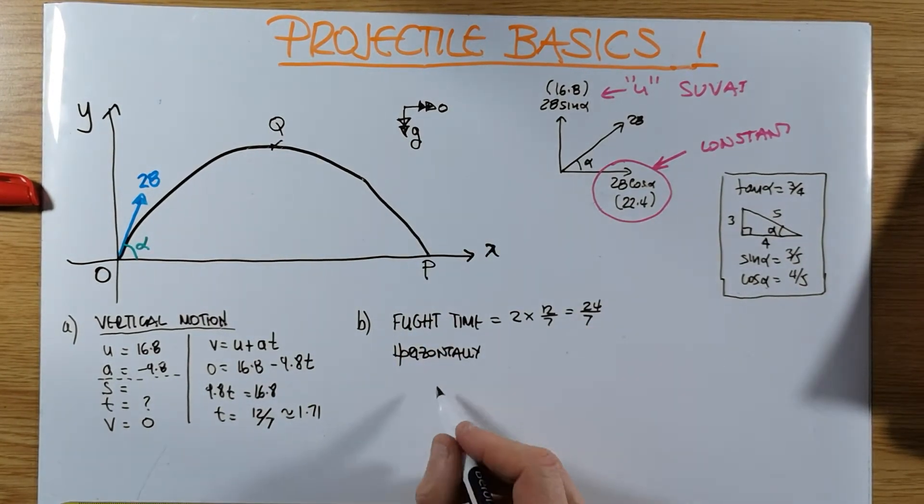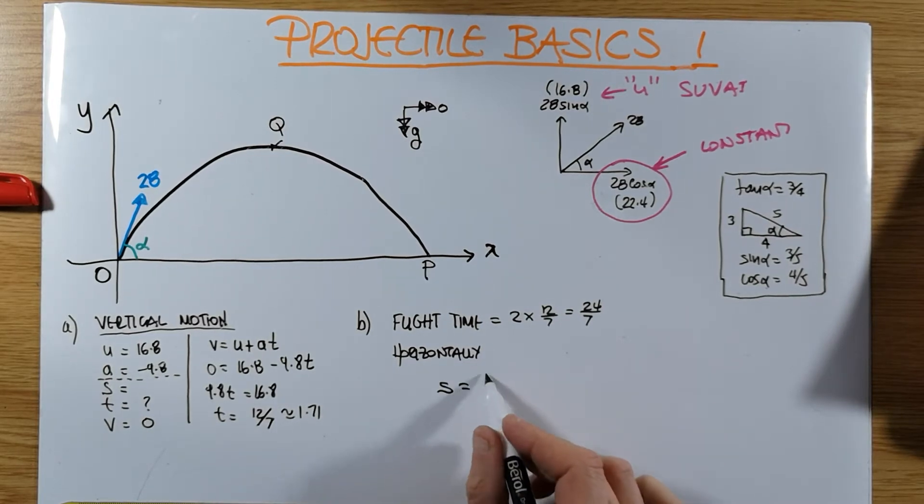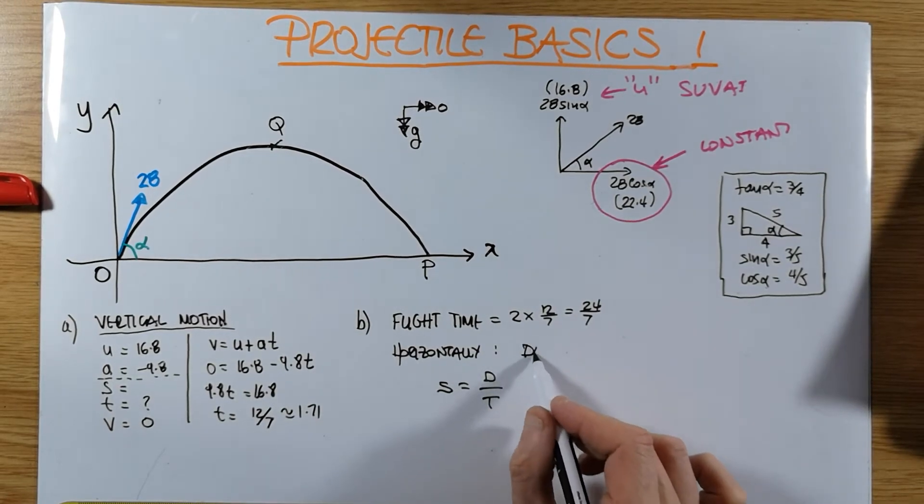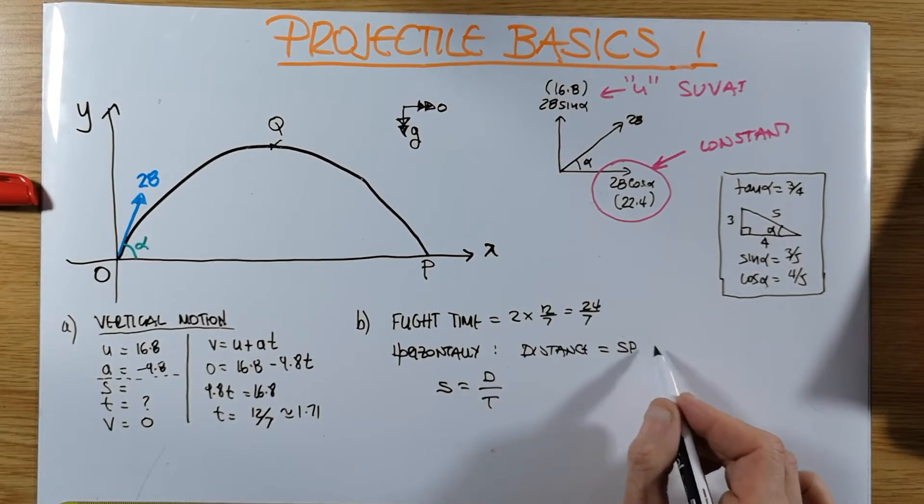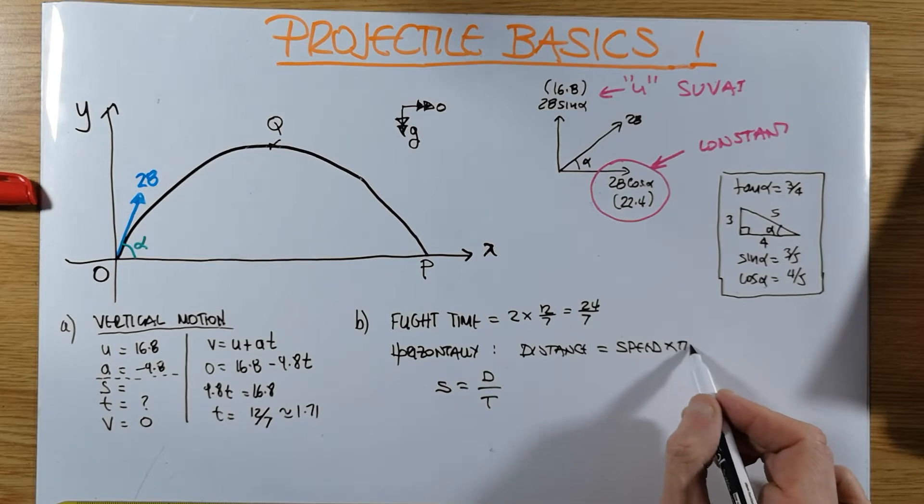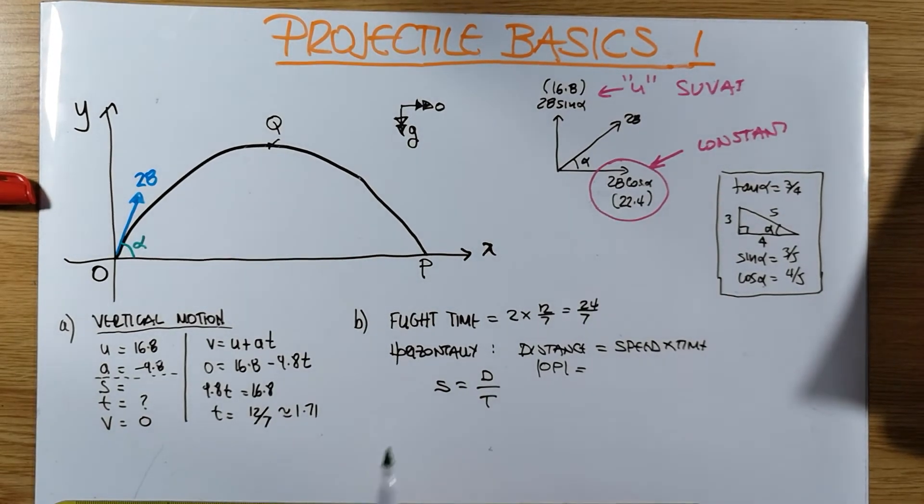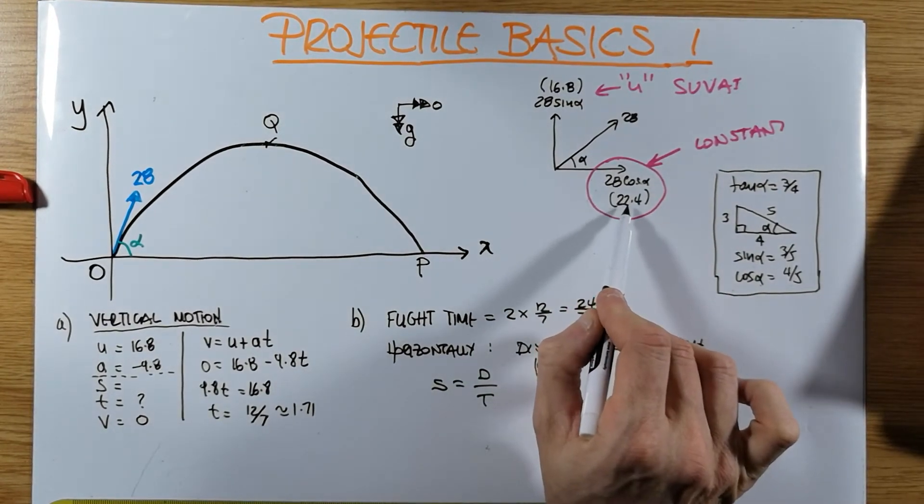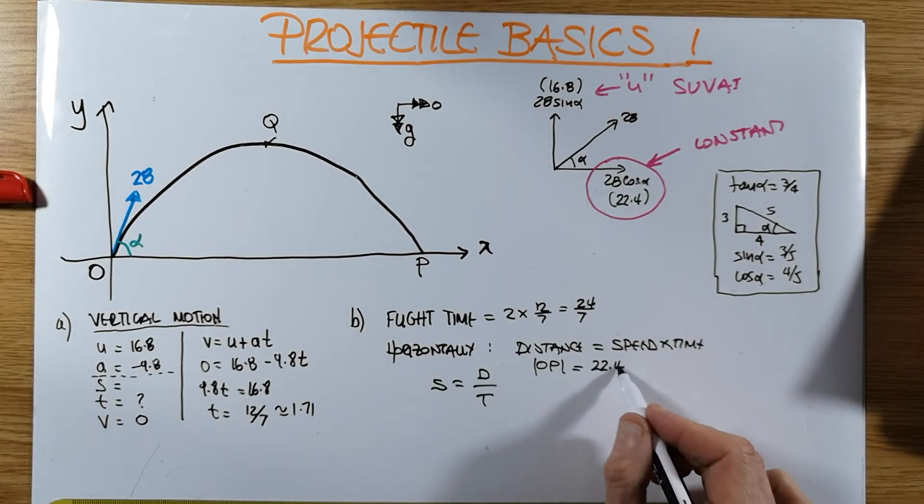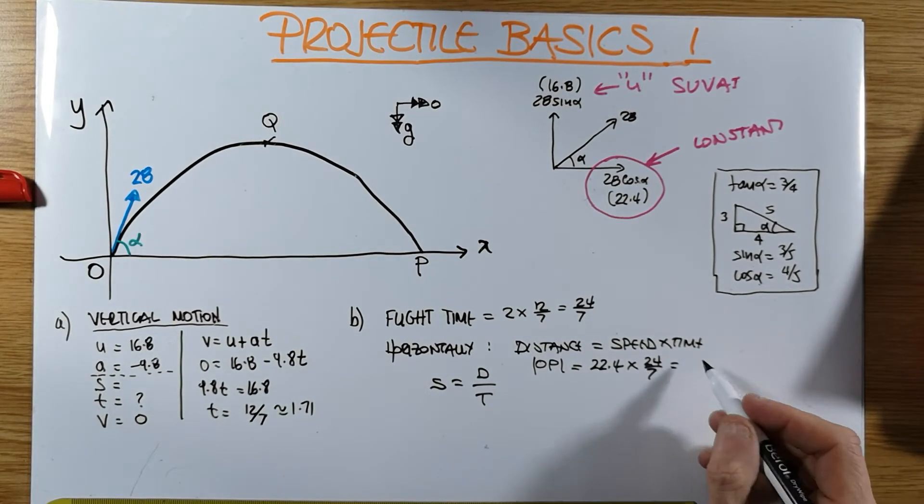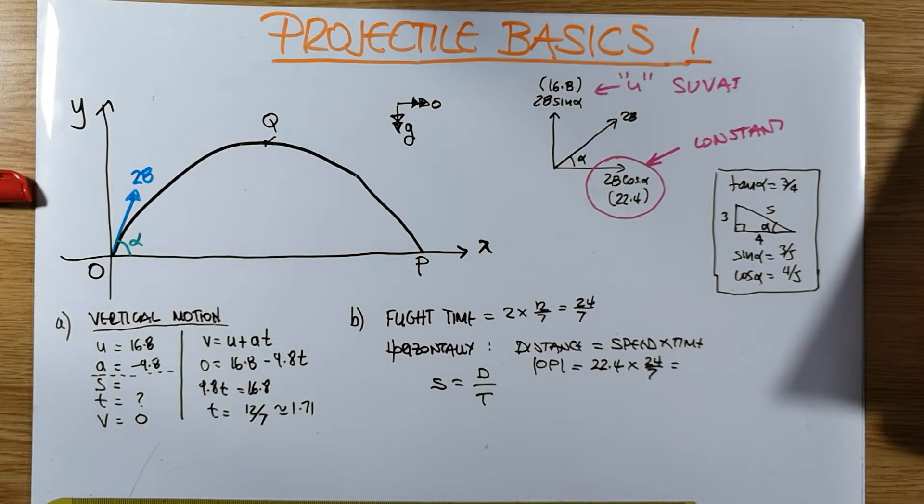So now, horizontally, because there is no acceleration, I can actually use the formula from year 9. Speed is equal to distance divided by time, which we will rearrange as distance is equal to speed times time. And of course, we can get the OP is the speed which we're moving horizontally. And horizontally, we'll move with a constant speed of 22.4 forever, for a total time of 24 over 7. And when you put that into your calculator, you should get an answer of 76.8 meters. So that's this distance from there to there.